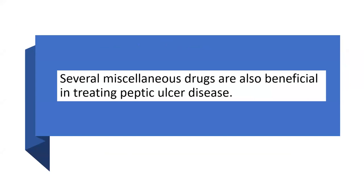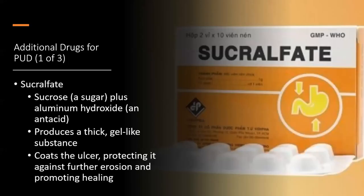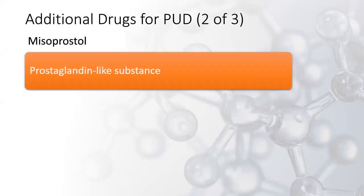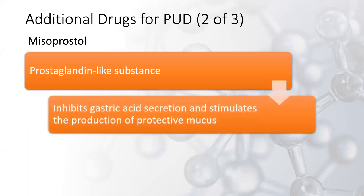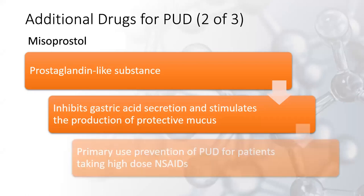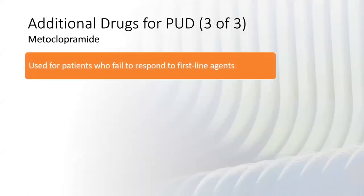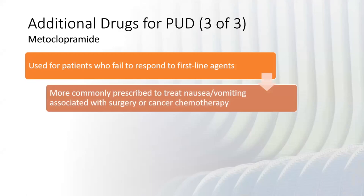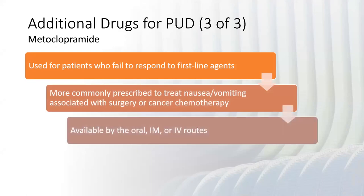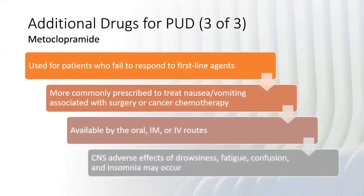Miscellaneous drugs beneficial in treating peptic ulcer disease include sucralfate, a sugar plus aluminum hydroxide and antacid which produces a thick gel-like substance that coats the ulcer, protecting it from further erosion and promoting healing. Misoprostol is a prostaglandin-like substance that inhibits gastric acid secretion and stimulates the production of protective mucosa — primarily used to prevent peptic ulcer disease in patients taking high doses of NSAIDs. Metoclopramide is used for patients who fail to respond to first-line agents and treats nausea or vomiting associated with surgery or cancer chemotherapy; it is available orally, IM, and IV, with CNS adverse effects including drowsiness, fatigue, confusion, and insomnia.